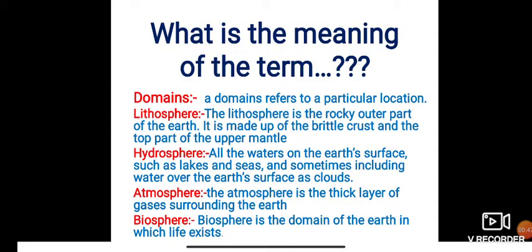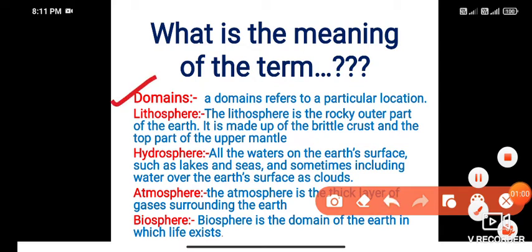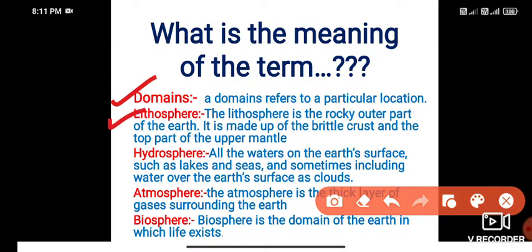Our aim for today is you will be able to explain the features of the four domains of the earth. Before we get into further discussion, let's be clear with the key terms. A domain refers to a particular location. The lithosphere is the rocky outer part of the earth — it is made up of the brittle crust and the top part of the upper mantle.